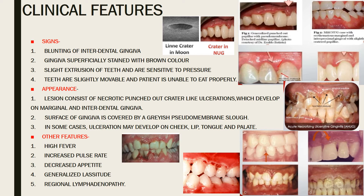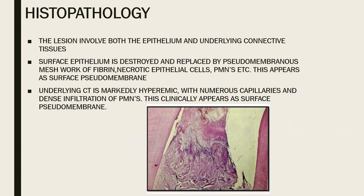Systemic features can include high fever, increased pulse rate, decreased appetite, generalized lassitude, and regional lymphadenopathy. These are the systemic complications that patients may suffer from when affected by ANUG.